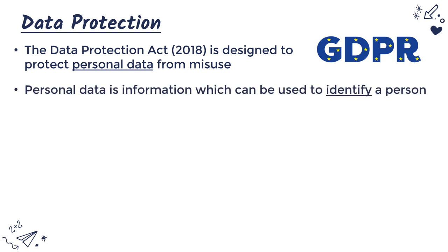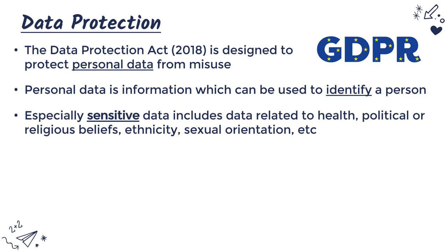Personal data is information which can be used to identify a person. Things like your hair colour or how many dogs you have can't really be used to identify you, but something like your date of birth, your fingerprint, or your bank account details are clearly personal bits of data. This law is especially careful about particularly sensitive data — things like your health, medical records, beliefs (political or religious), your ethnicity, and your sexual orientation.